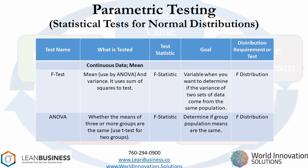ANOVA, or analysis of variation, tests whether a set of sample means between several samples are statistically significantly different from each other. An example could be looking at three orthopedic surgeons performing the same knee operations and evaluating average operation time. This would give you information guiding you to performance improvement.